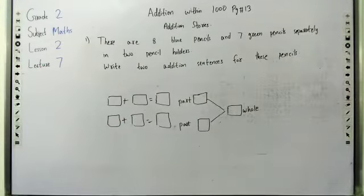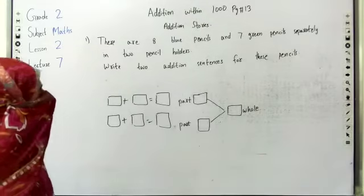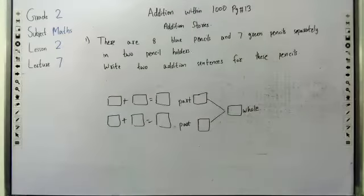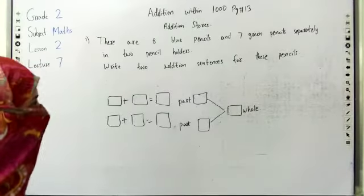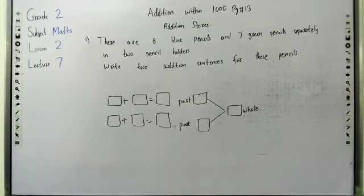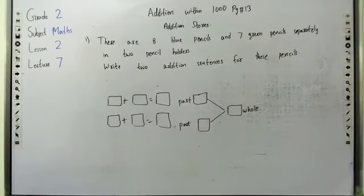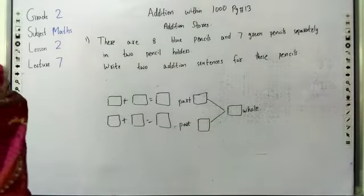So our question is: there are eight blue pencils and seven green pencils separately in two pencil holders. Write two addition sentences for these pencils. If you look at the book, you will see the green and blue pencils—eight blue pencils and seven green pencils.